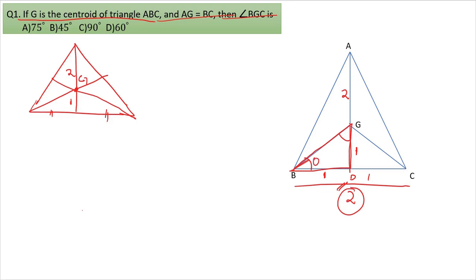In this isosceles triangle, the two base angles are equal — I'll name each theta. Similarly, triangle ZDC also has two sides of length 1, making it another isosceles triangle with equal base angles, also theta. Since all three shorter segments are length 1, all these angles will be equal.